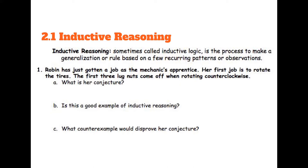So Robin has just gotten a job at the mechanic's as the mechanic's apprentice. Her first job is to rotate the tires. The first three lug nuts come off when rotating counterclockwise. So what's her conjecture? Remember conjecture is just kind of like a rule based on some evidence.